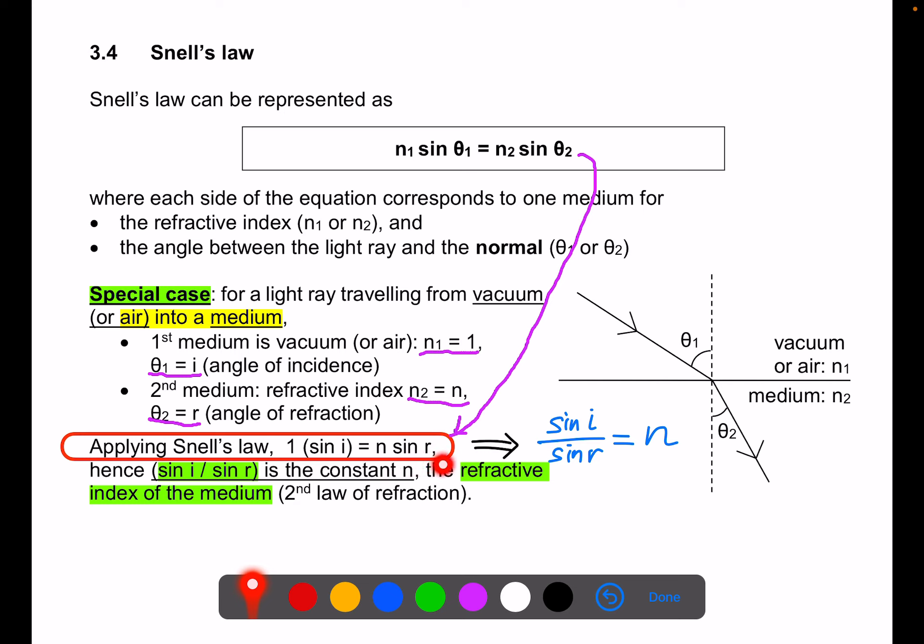And simplifying, we have sine i over sine r is equal to n, the constant which we know as the refractive index of the second medium. And this is what we have given the second law of refraction.